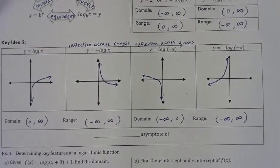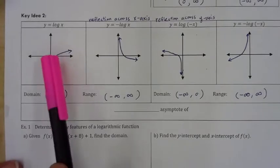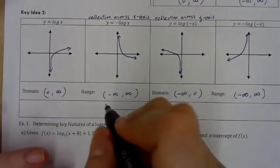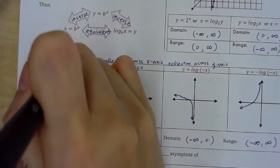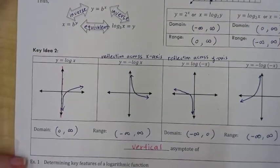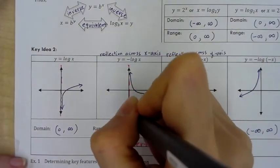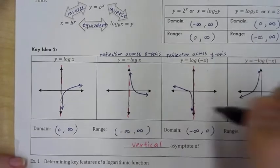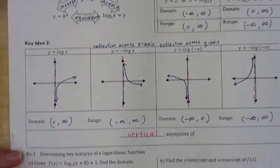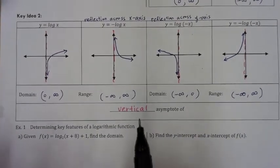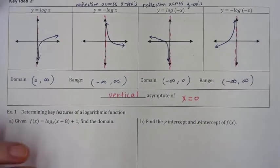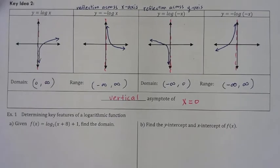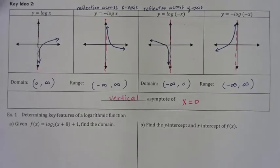A key idea of log functions is that they all have a vertical asymptote — a line the function approaches but will never cross or touch. Log functions will always have a vertical asymptote of x equals 0, or sometimes x equals some other number depending on transformations.